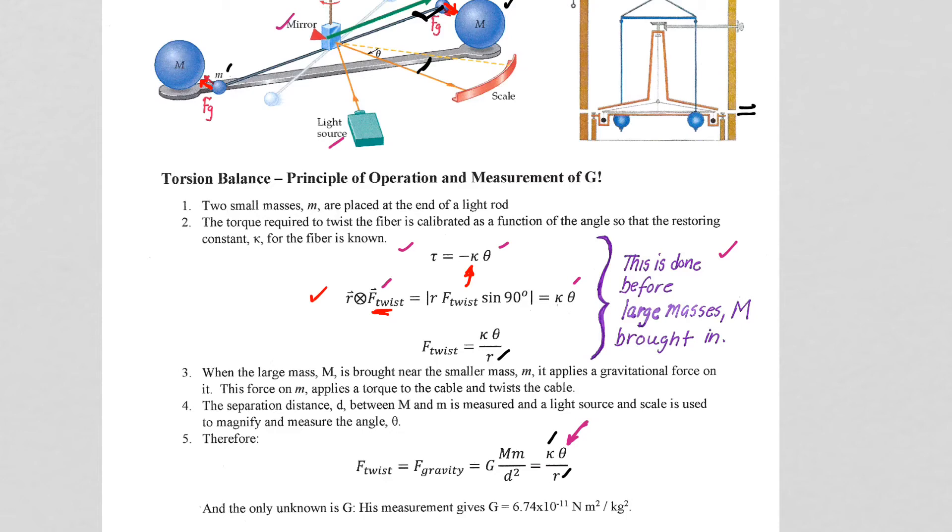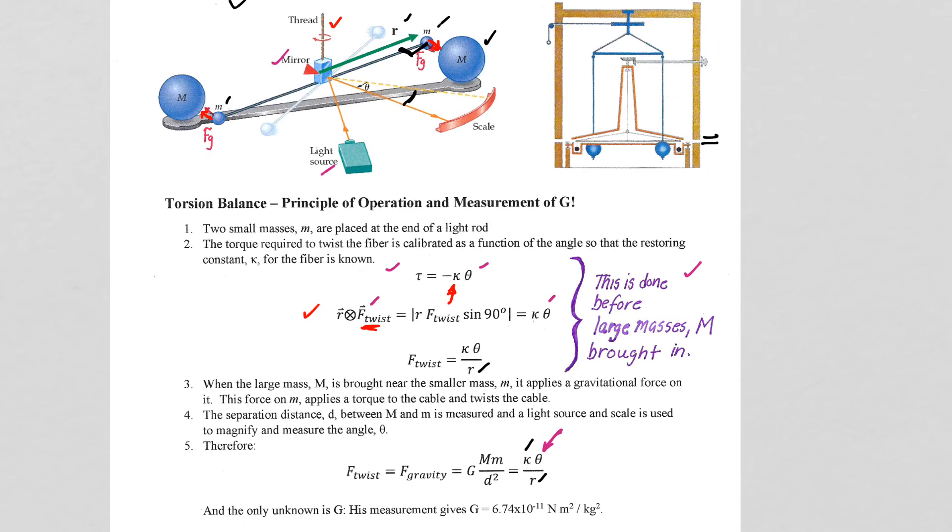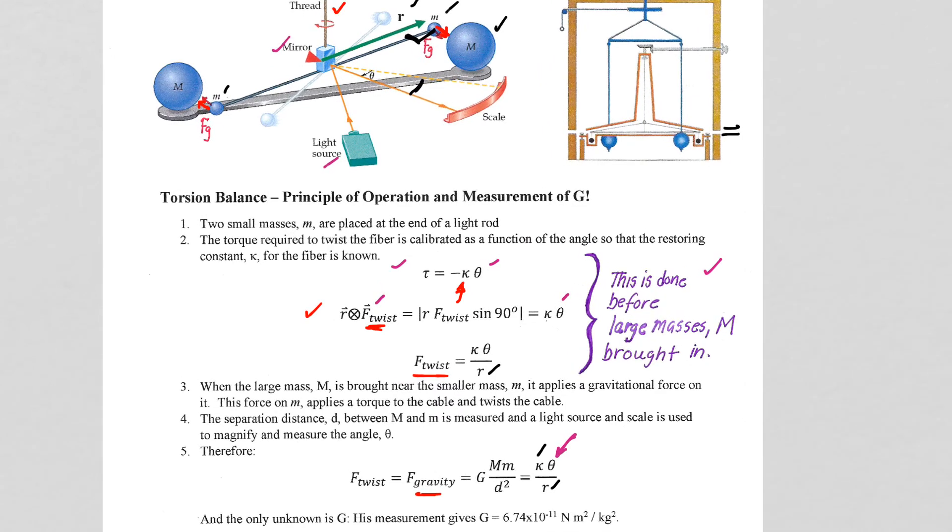But when you look at now at what is possible theoretically, the gravitational force takes the place of the force twist. So now you bring in the large spheres, the gravity force, the G, capital M, little m, over d squared.